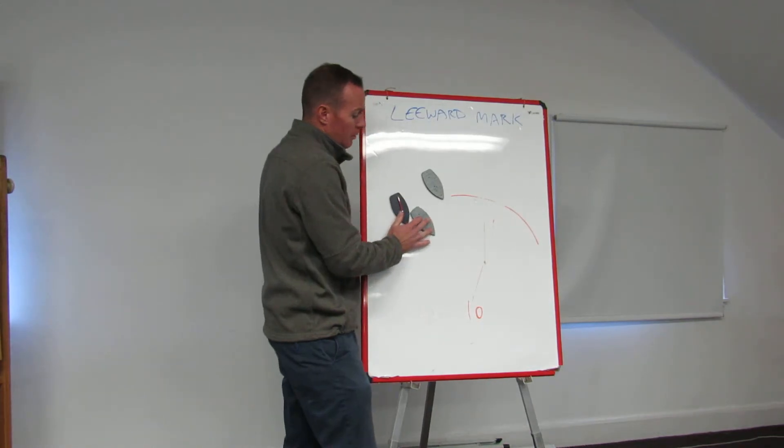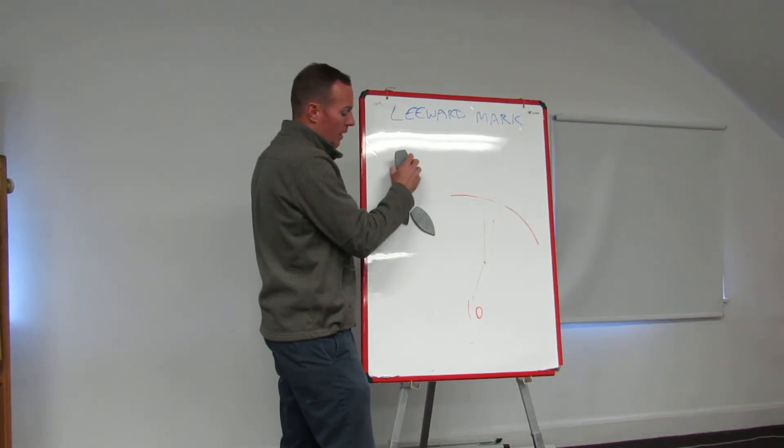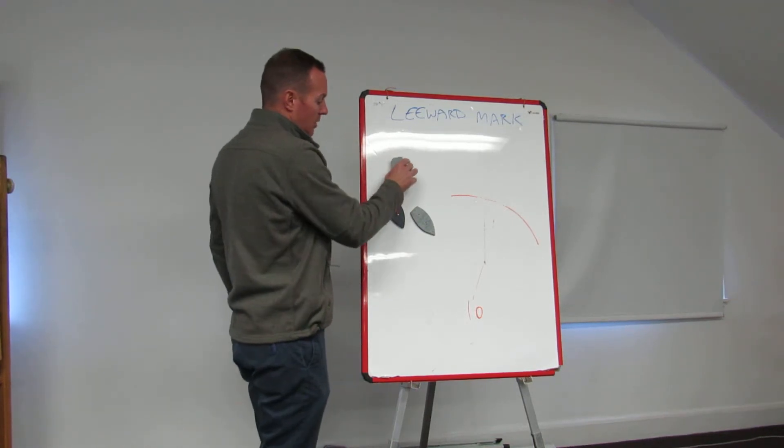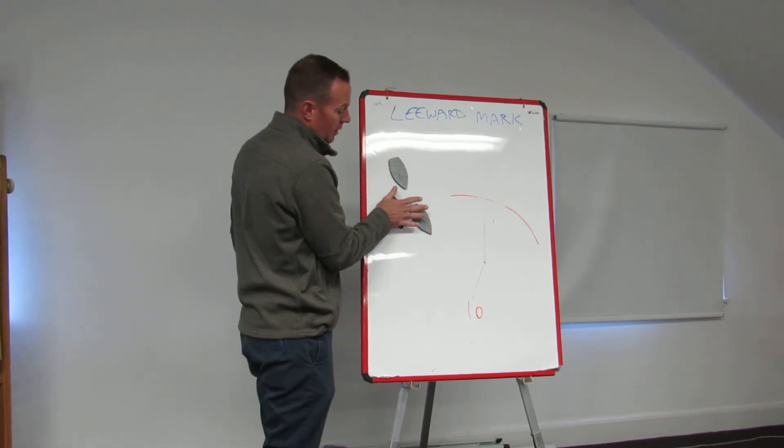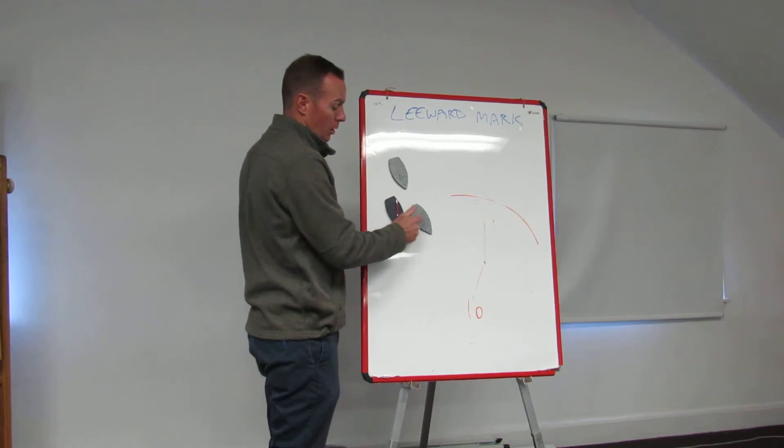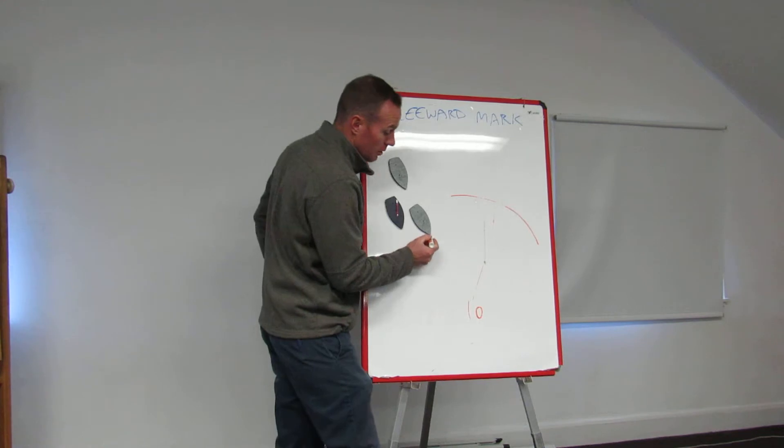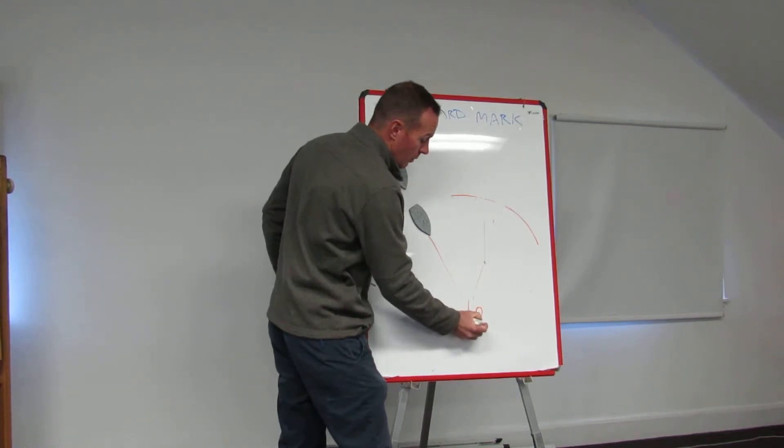If you're approaching the mark from port tack, even though you might have been leeward boat, from the time you enter the zone, either clear ahead or inside, you now have mark room, room to sail to the mark, and room to round the mark.